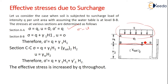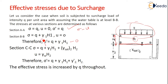At section BB: sigma = q + gamma1·h1, pore water pressure u = 0 since water table is at BB, so sigma' = q + gamma1·h1.